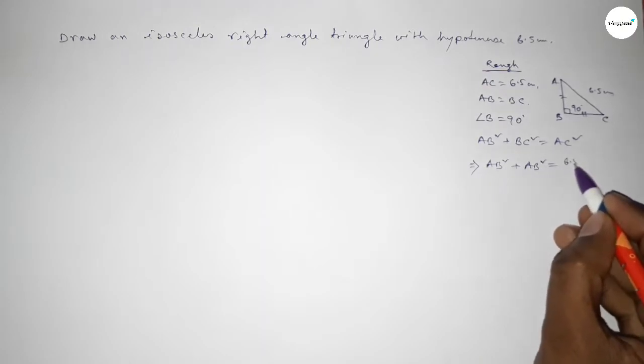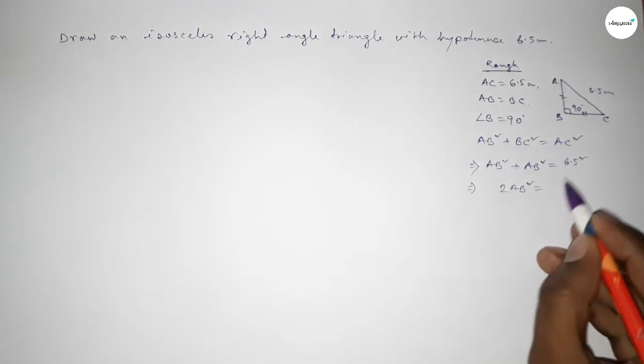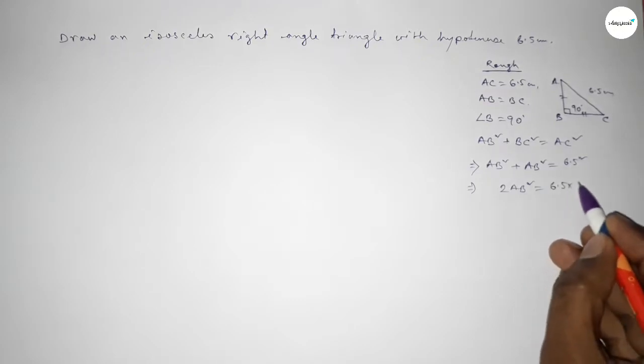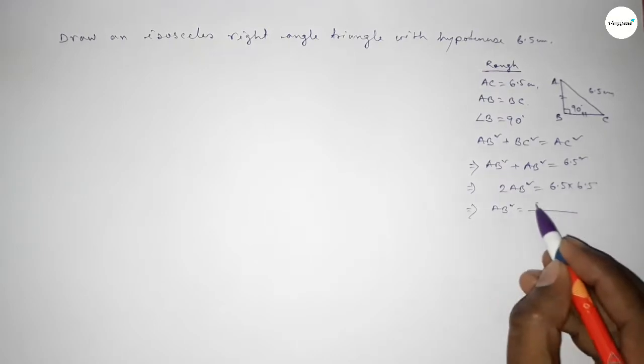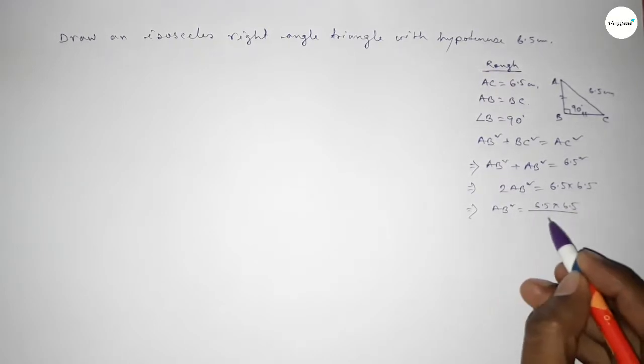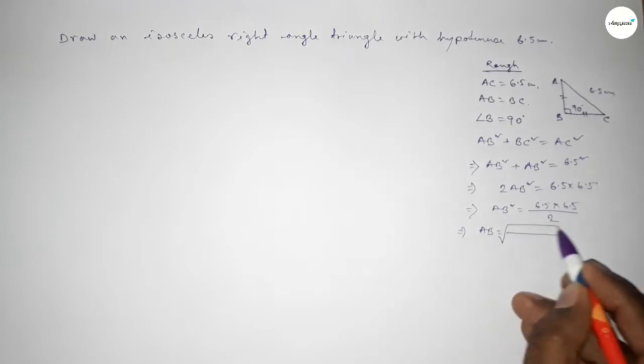This is 6.5, so this is 6.5 square. Now 2AB square equal to this is 6.5 into 6.5, implies that AB square equal to 6.5 into 6.5 over 2, implies that AB equal to...